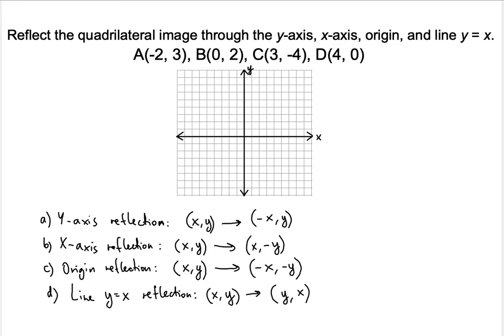How do y-axis reflections, x-axis reflections, origin reflections, and line reflections work? When it comes to y-axis reflection, you have to picture something with simple lines. Before we determine the shape in the corresponding reflections, let me draw simple examples and then we'll see how this works.